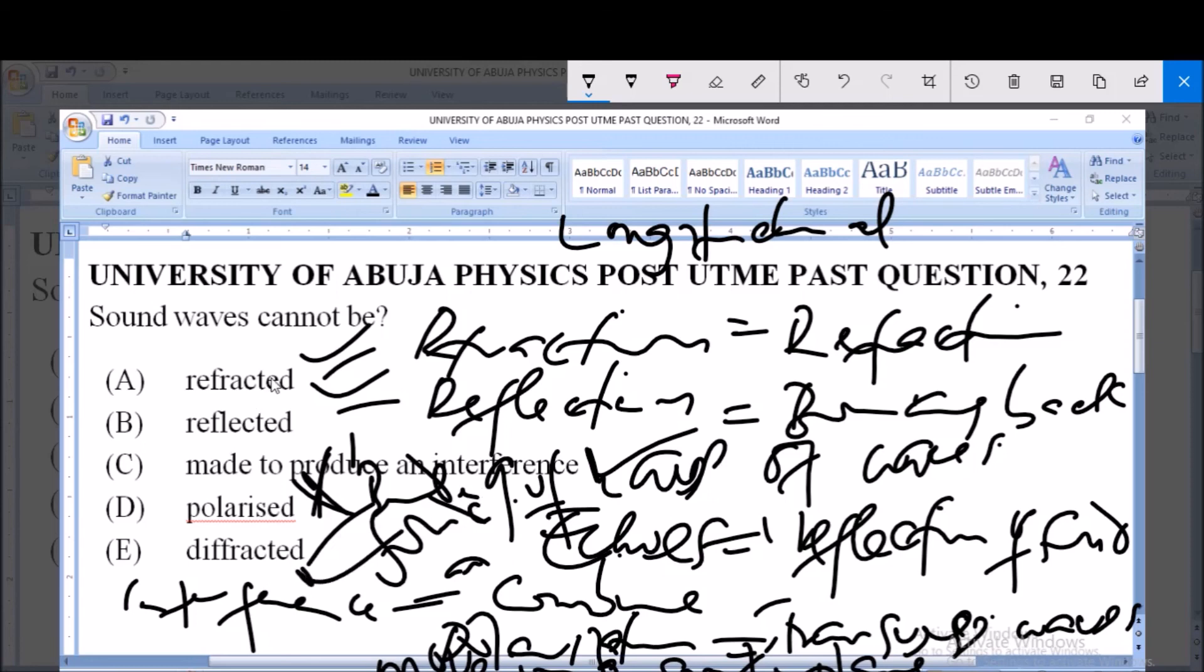So sound waves can be reflected, they can be made to produce an interference, and they can be diffracted. But polarization is out of it. Sound waves cannot be polarized and that's option D, because they are longitudinal waves. The answer to this particular question is option D. Thank you and God bless you. Please ensure you subscribe to our channel for more.